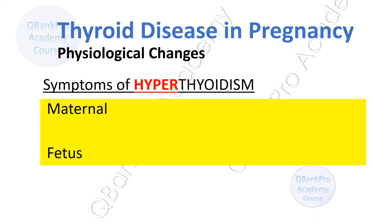Symptoms of hyperthyroidism in the mother may include an irregular or rapid heart rate, increased blood pressure, hot flashes, sweating, irritability, weight loss, weakness, difficulty sleeping, hair loss, nausea and vomiting, and tremors.